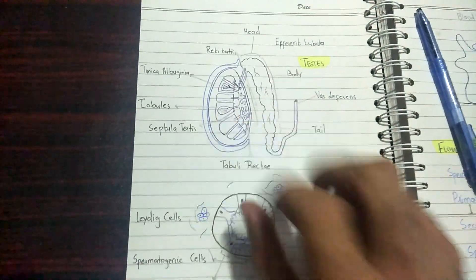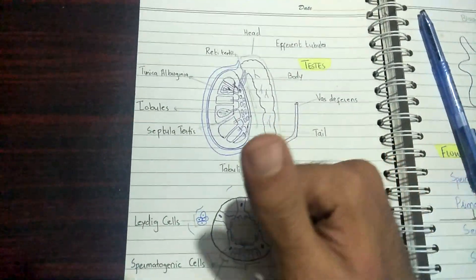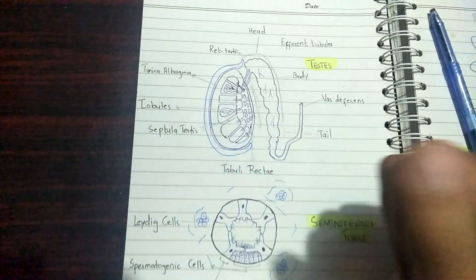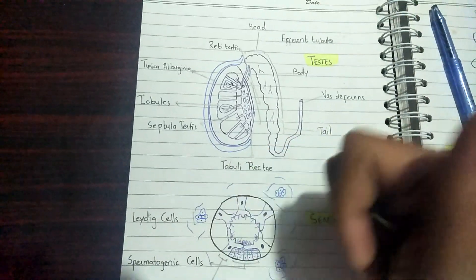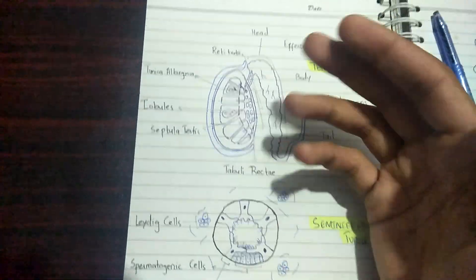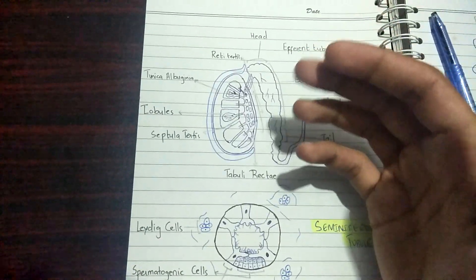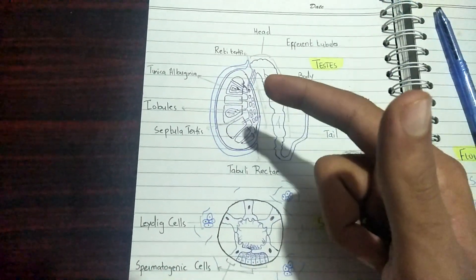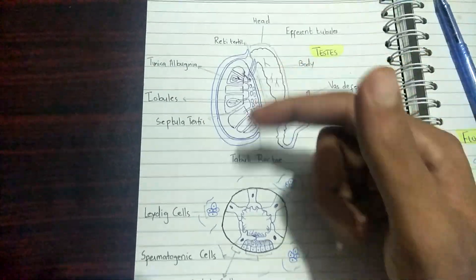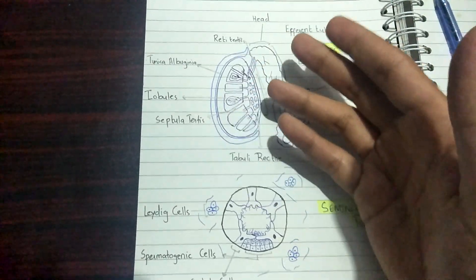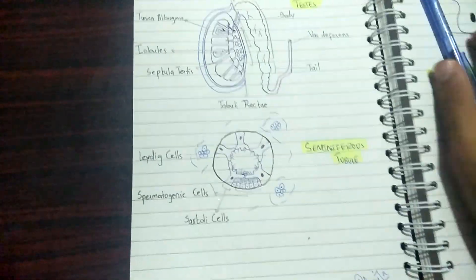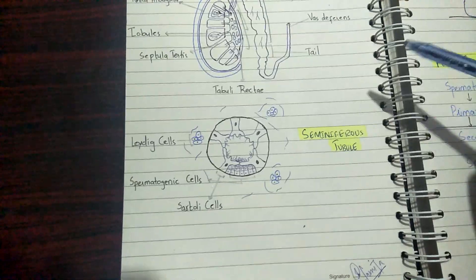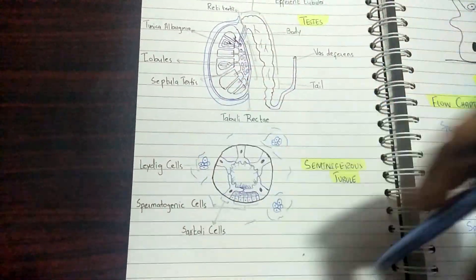Coming to the functions of the testes, there are two major functions: number one is the formation of the hormone testosterone, and number two is the formation of sperm — the male gamete — for the purpose of fertilization.